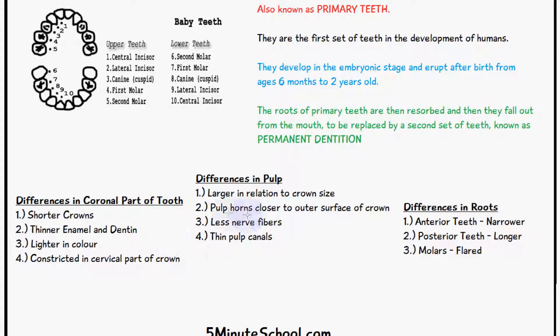The differences in the pulp are that it's a lot larger in relation to its crown size, the pulp horns are closer to the outer surface of the crown, there are fewer nerve fibres, and the pulp canals are much thinner.